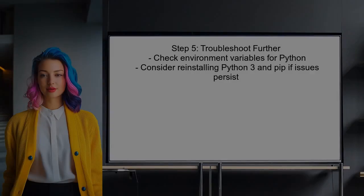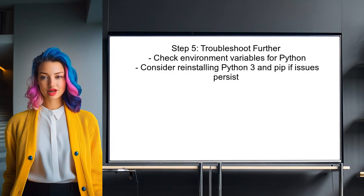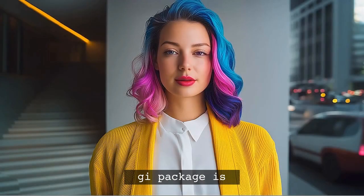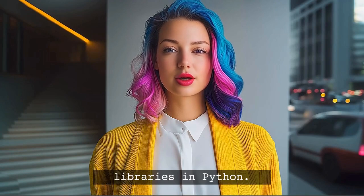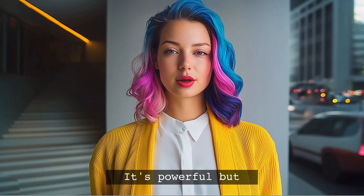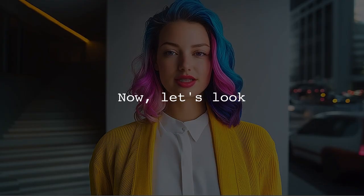If the user still encounters issues, they may need to check their environment variables or consider reinstalling Python 3 and pip to ensure everything is set up correctly. Fun fact: the GI package is part of gobject introspection, which allows you to use C libraries in Python. It's a powerful tool, but it can be tricky to install correctly.